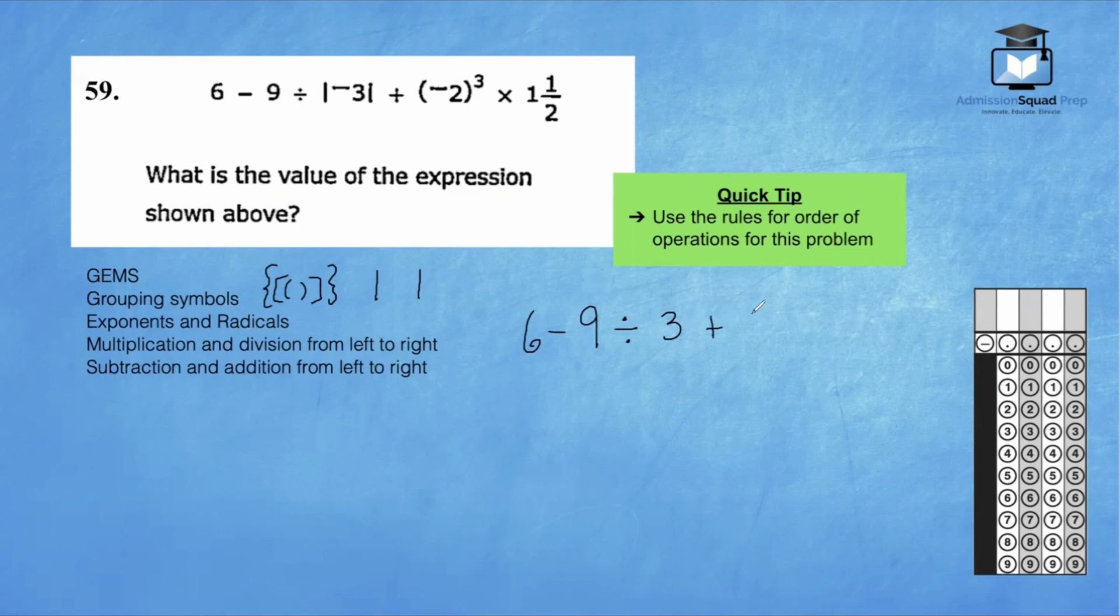Then we have plus negative 2 to the third power. So now we're getting into the exponents. Negative 2 to the third power is simply negative 2 times negative 2 times negative 2. Negative 2 times negative 2 is positive 4. And positive 4 times negative 2 is negative 8. So we're adding negative 8 here. Then we're going to multiply by 1 and a half. We're actually going to change this 1 and a half into an improper fraction here in a second. So we've tackled our grouping symbols and the exponent.